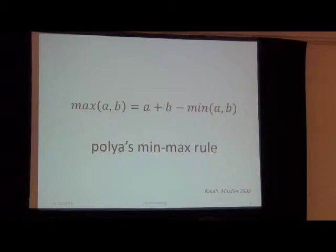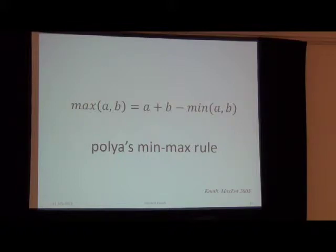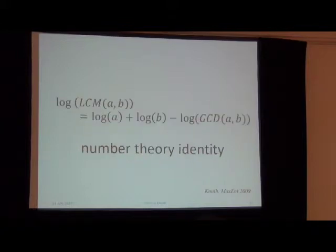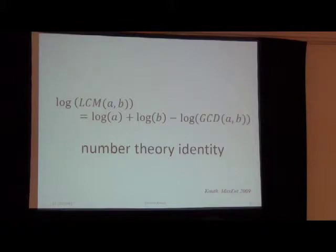On slide 11, you'll see one of my favorite rules — Polya's min-max rule, where the maximum of two numbers a and b is equal to their sum minus the minimum. It's a very trivial case, but I think it's because of that that it really highlights the fundamental nature of this formula. On slide 12 is an example from number theory: the log of the least common multiple of two integers a and b equals the log of a plus the log of b minus the log of the greatest common divisor.